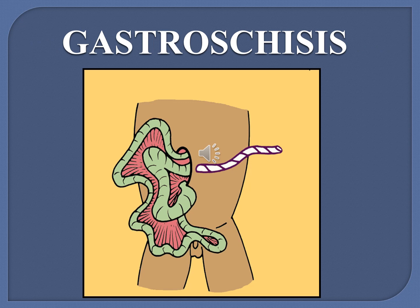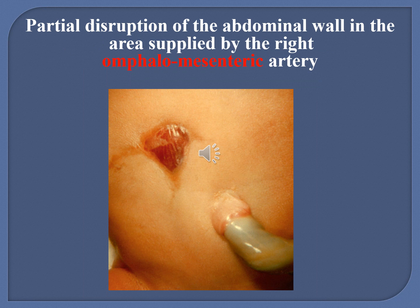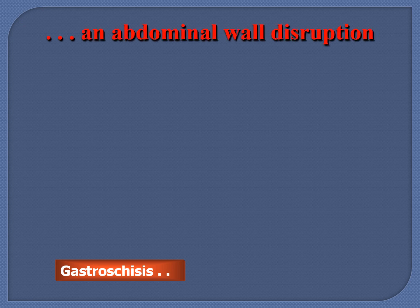Gastroschisis is another example of disruption. It is a birth defect where an opening forms in the baby's abdominal wall and the baby's bowel pushes out through this hole, developing outside the baby's body in the amniotic fluid. There is a partial disruption of the abdominal wall supplied by the right umbilical mesenteric artery. The defect in gastroschisis, where the bowel was out, can be surgically closed.